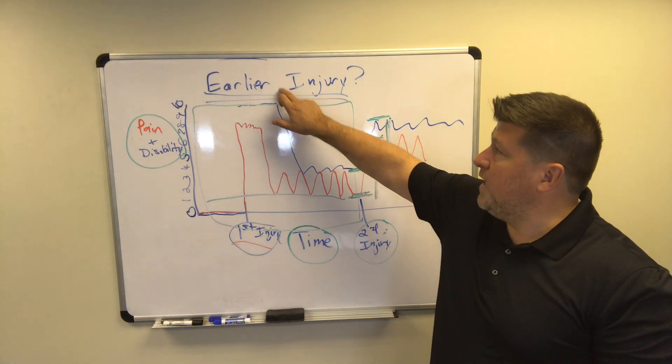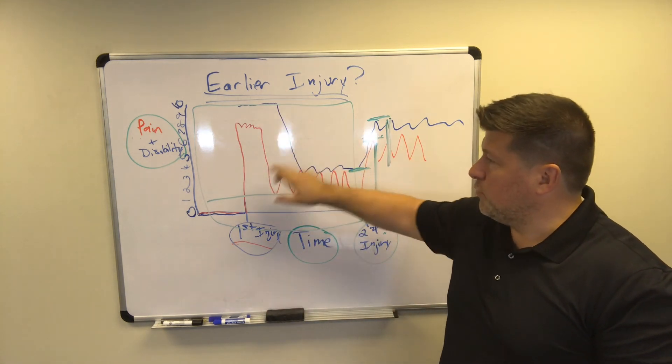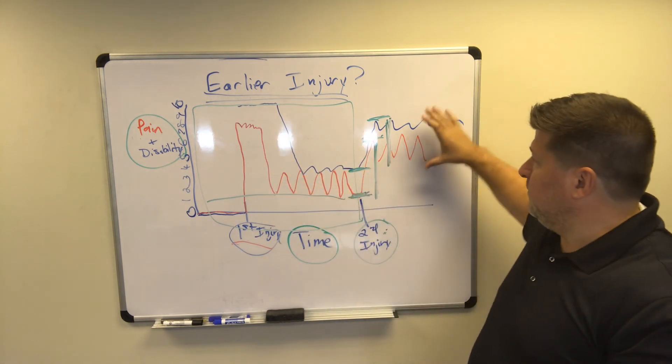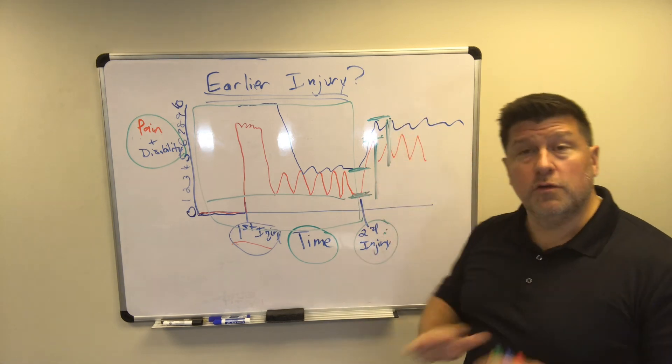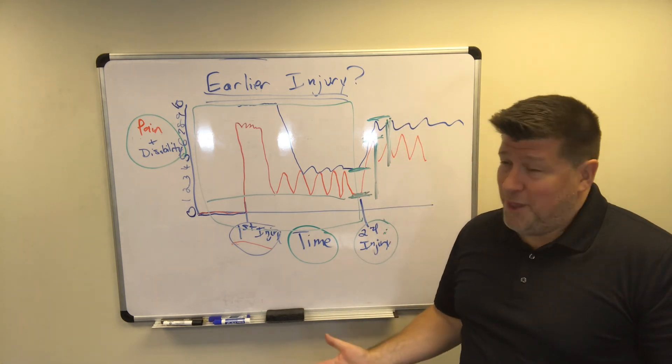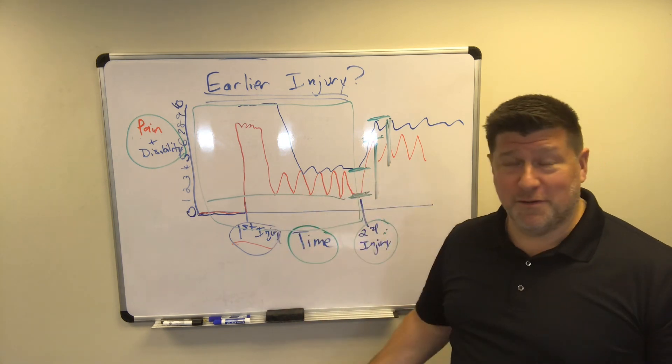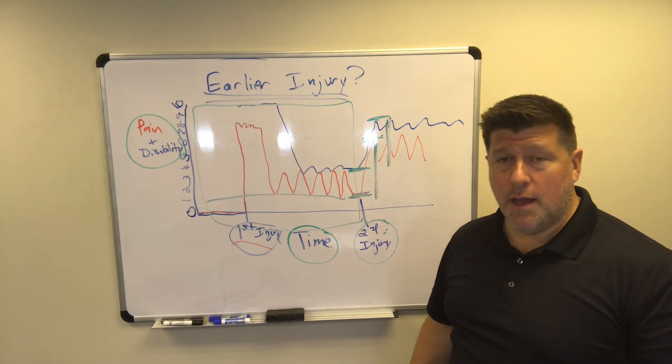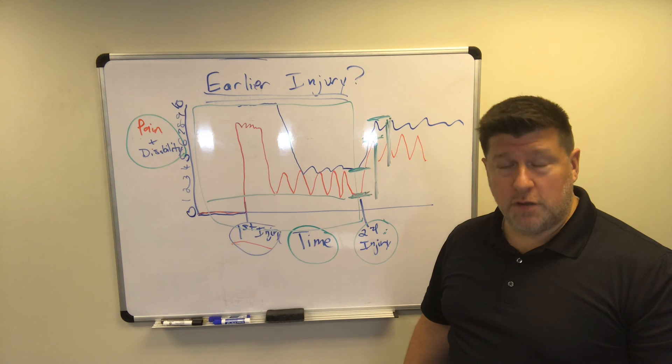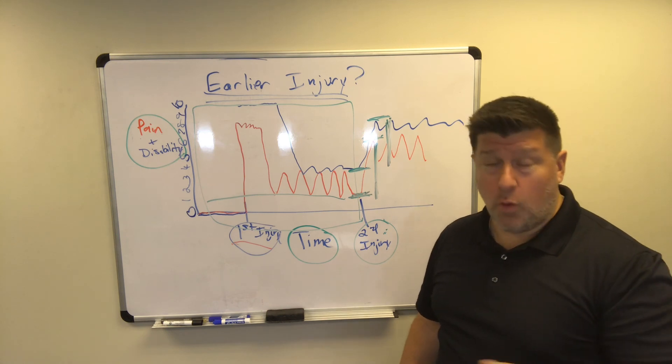Pre-existing condition is just lawyer speak for an earlier injury. So absolutely, even if you had an earlier injury or arthritis in a body part, if your new accident makes it worse, you absolutely can bring a claim. So I hope that was clear. I know my art skills are not very good, but hopefully that helps you understand what we're doing. Thanks for watching and have a great night.